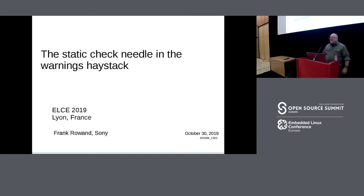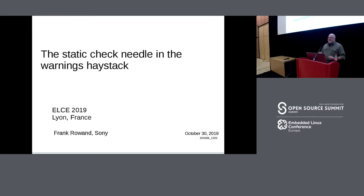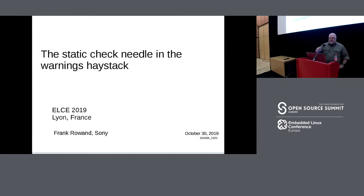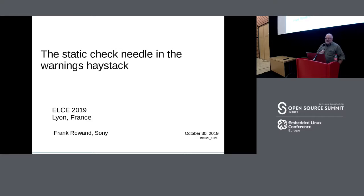I'm Frank Rowand. I have a couple of roles that relate to this talk. I work for Sony, and one of those roles is I teach people inside of Sony how to work in open source, including how to work with the kernel. Some of the things I was teaching in a class motivated me to give this talk - I was trying to explain how to ferret out warnings when you modify source code. I'm also a kernel maintainer, and in that role I face the same problem, and I have my own set of scripts historically to deal with that issue. When I started this talk, I realized I could do much better, and I came up with a much better set of scripts, which we'll see later in the talk.